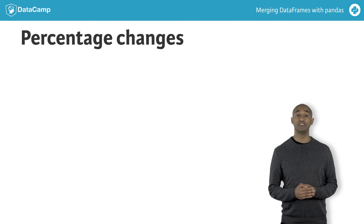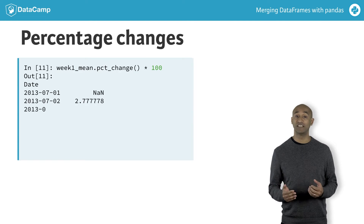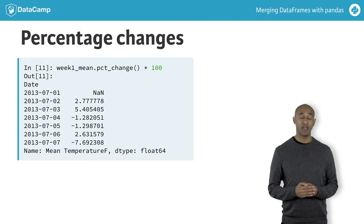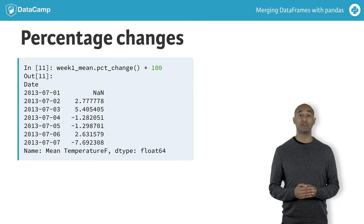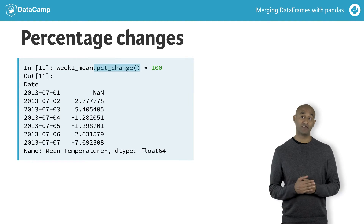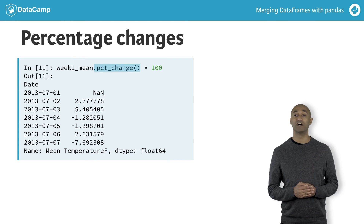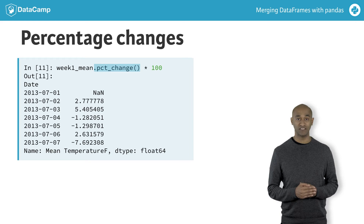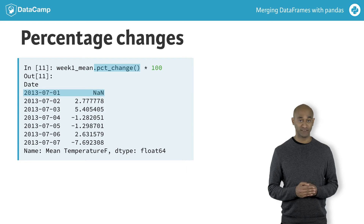A related computation is to compute a percentage change along a time series. We do this by subtracting the previous day's value from the current day's value and dividing by the previous day's value. The pct_change method does precisely this computation for us. Here, we also multiply the resulting series by 100 to yield a percentage value. Notice the value in the first row is NaN because there is no previous entry.